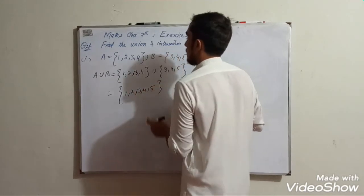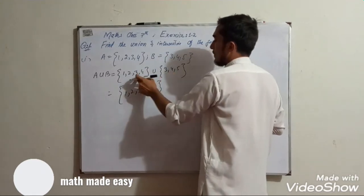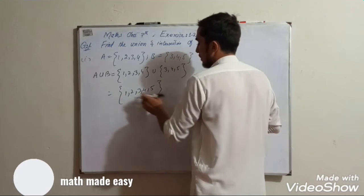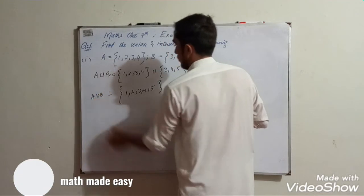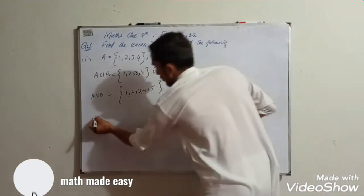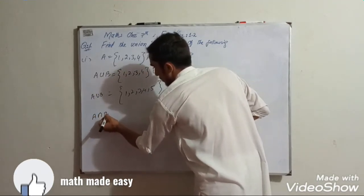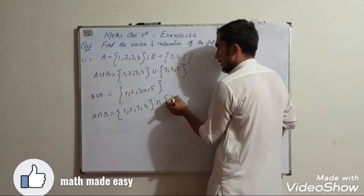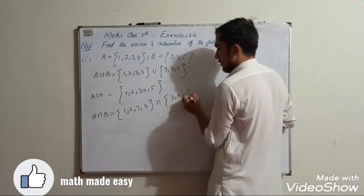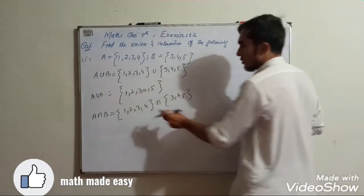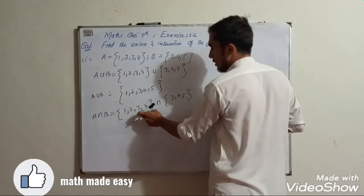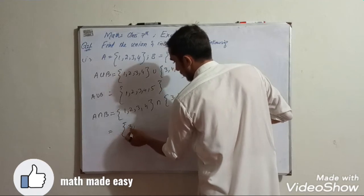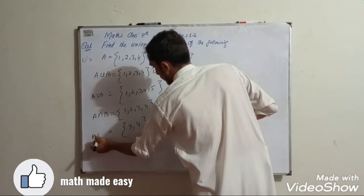The union gives {1,2,3,4,5}. For the intersection, A intersection B — we find the common elements. A intersection B is {3, 4}.